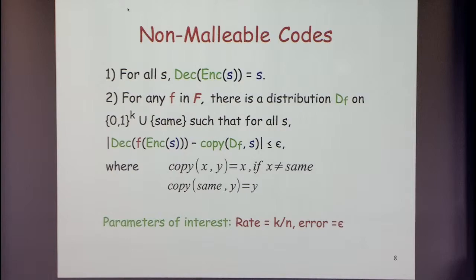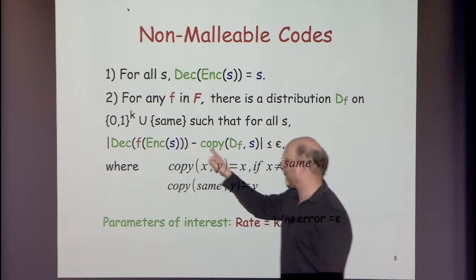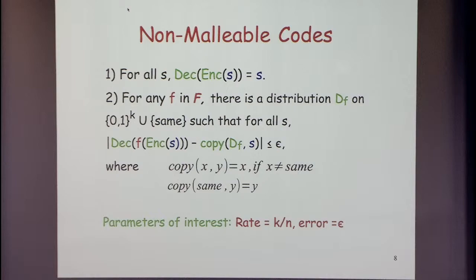Question: are we assuming common randomization on the encoder-decoder side? Answer: there's no shared randomness — the decoder doesn't have access to the randomness the encoder uses. Things become easier with shared randomness, but there's none here. The subtraction in the definition is statistical distance, or half the L1 norm.